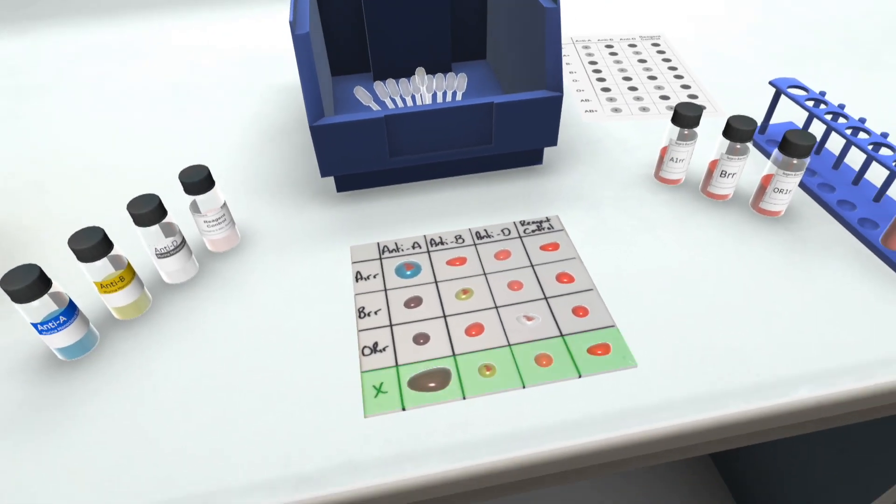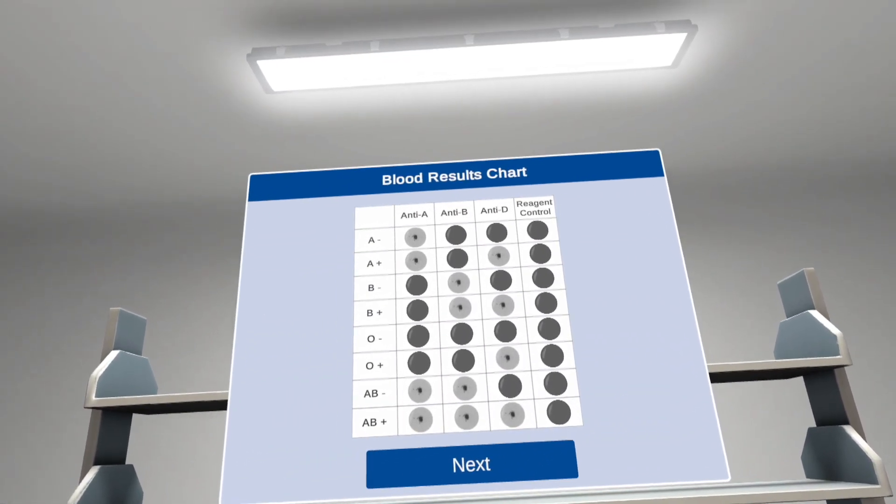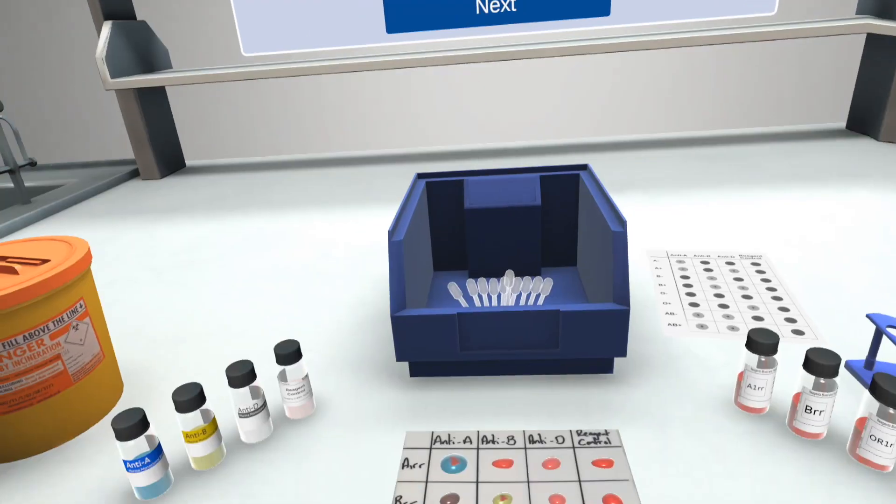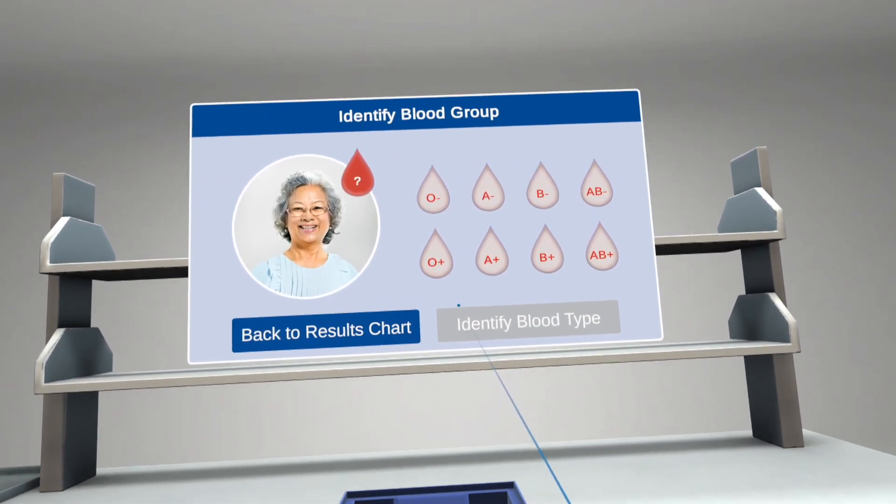The results are in. Consult the blood results chart to help interpret your findings. Compare the bottom row of your tile with each row of the chart and look for a match. Select the blood type that corresponds with your choice.